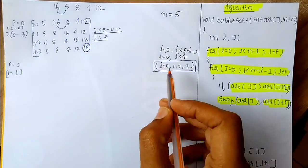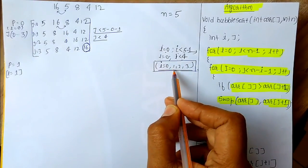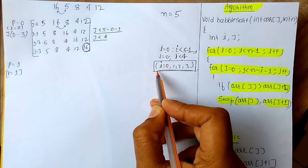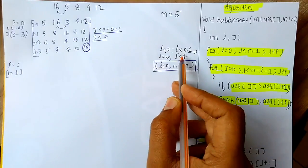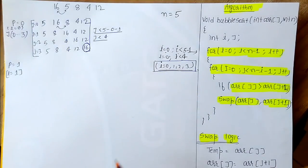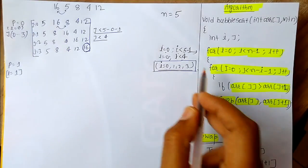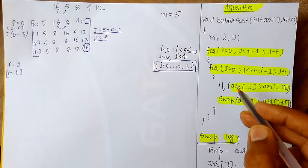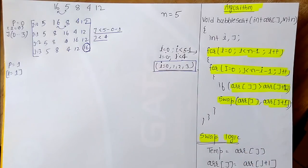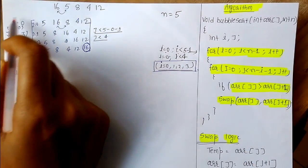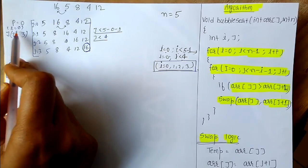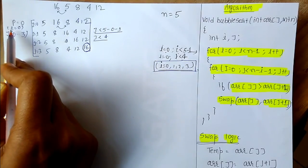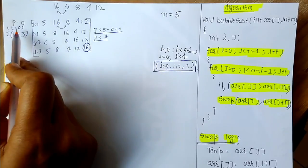That means i will run for values 0, 1, 2, and 3 — so 4 iterations of i will run. Now we will enter to j. Let us take pass 0 — in pass 0, i is equal to 0. So let us look at what things will be done when i equals 0.